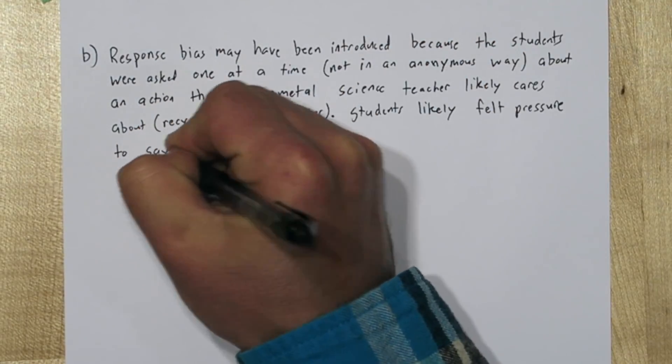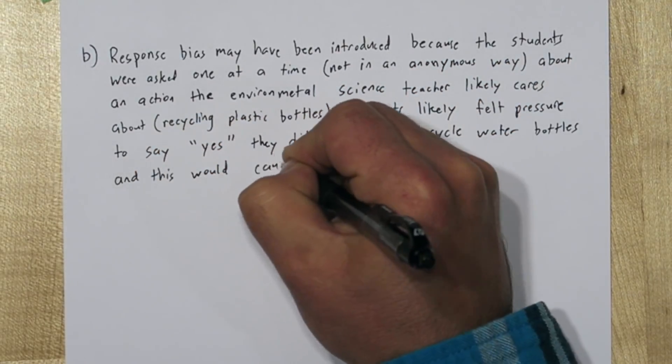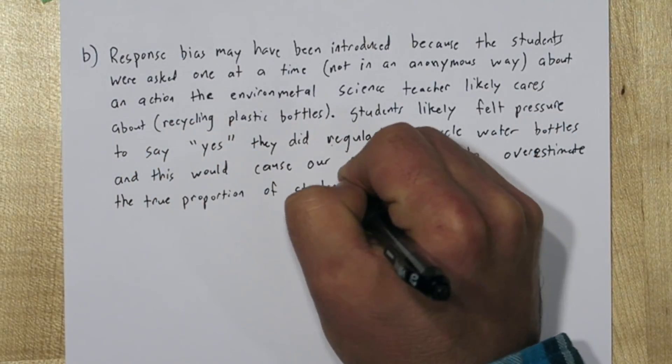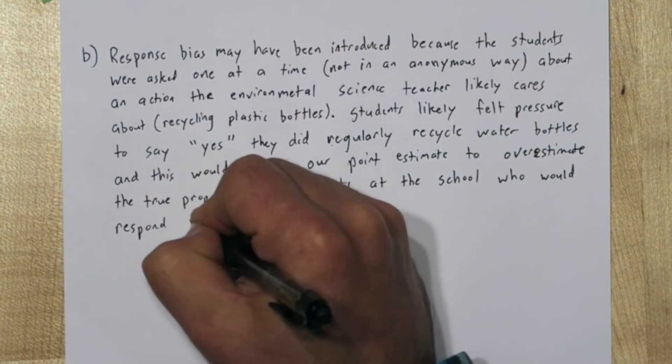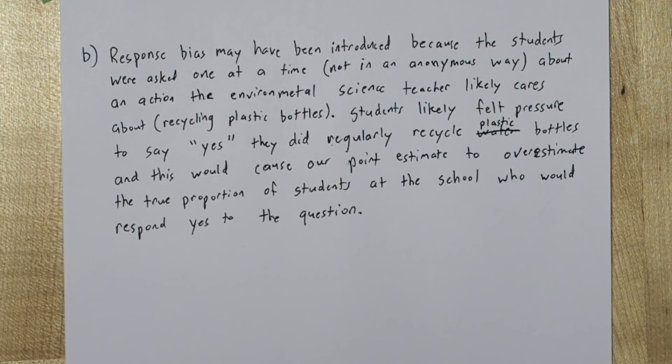So how would that affect our point estimate? We can say students likely felt pressure to say yes, they did regularly recycle plastic bottles. And this would cause our point estimate to overestimate the true proportion of students at the school who would respond yes to the question. Anytime you identify a bias, you should always identify the direction. So in this case, we'd expect an overestimate of our true parameter value since there was a response bias favoring saying yes.